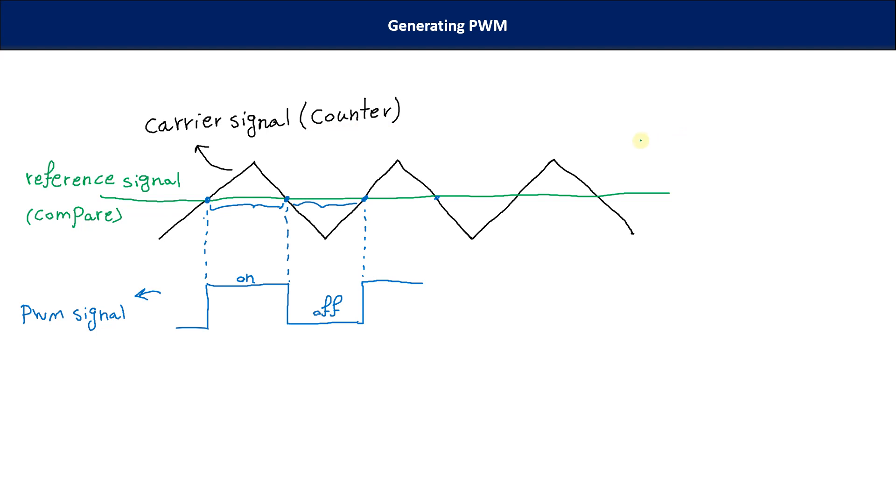Let's see. This begins with zero and it continues to reach TBPRD. And again, it goes down. Okay, this is our counter.